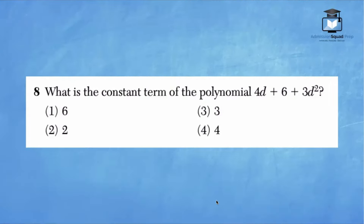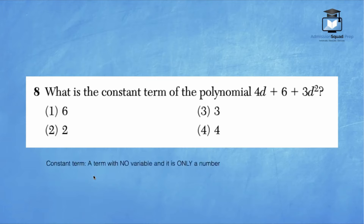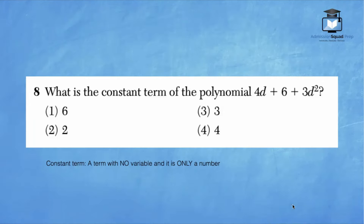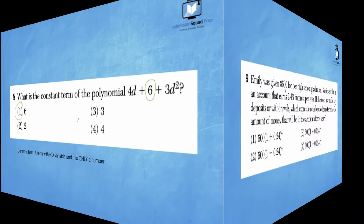Number 8: what is the constant term of the polynomial 4d plus 6 plus 3d²? A constant term is a term with no variable — no x, y, a, b, c, or d — it is only a number. Looking at this polynomial, 6 is the term with no variable, so that is the correct answer.